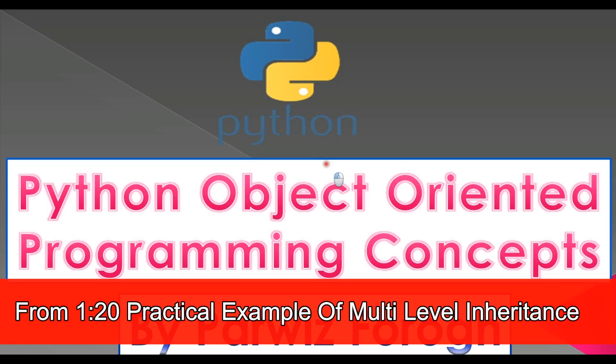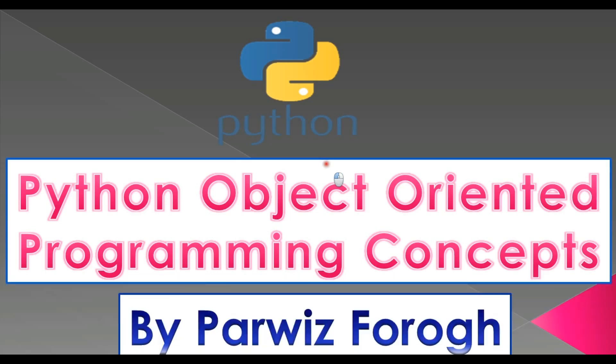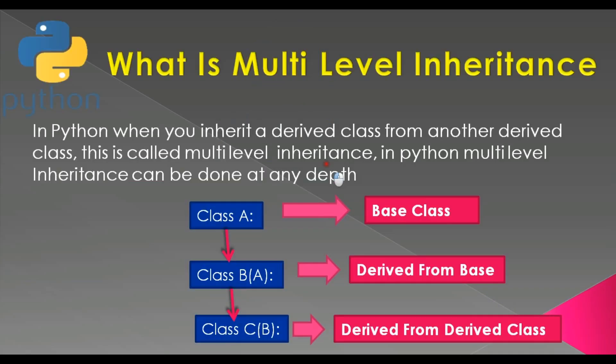In the previous video we learned about multiple inheritance and created a practical example. In this video we are going to talk about multi-level inheritance. First of all, what is multi-level inheritance in Python? When you inherit a derived class from another derived class, this is called multi-level inheritance.